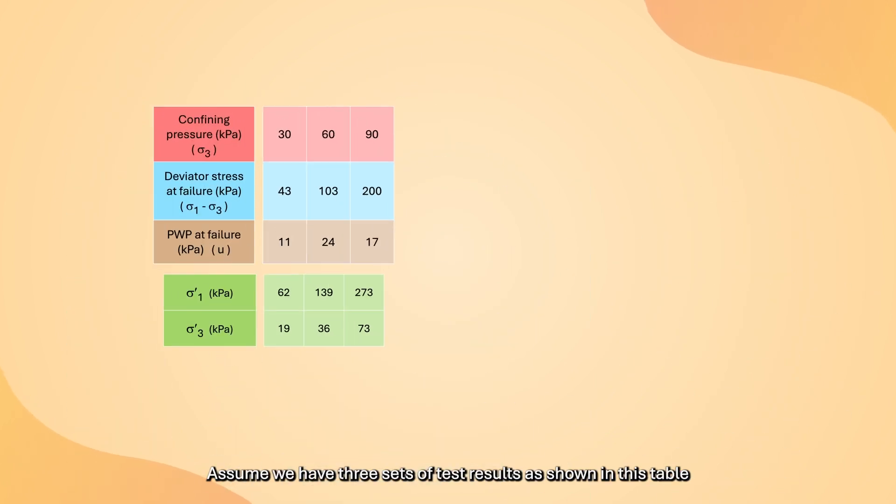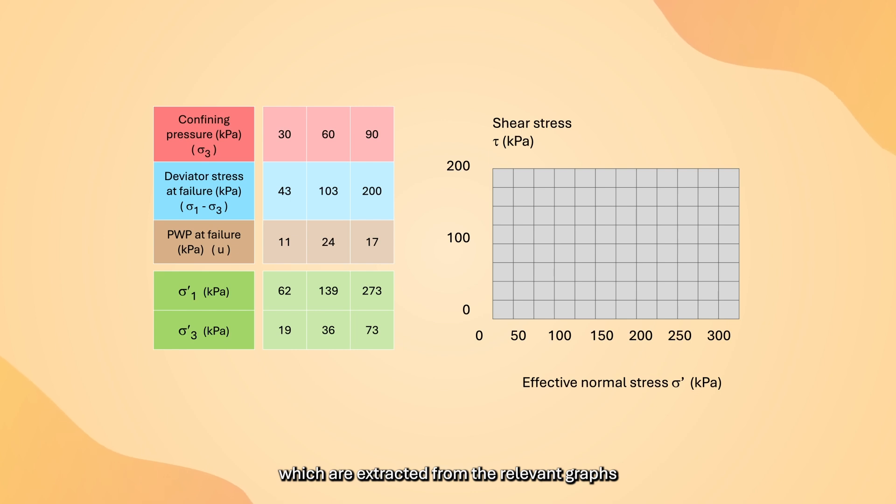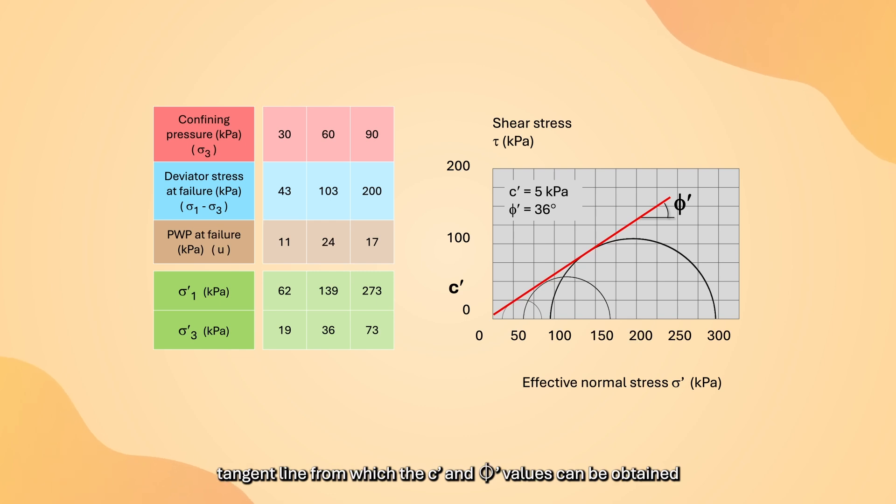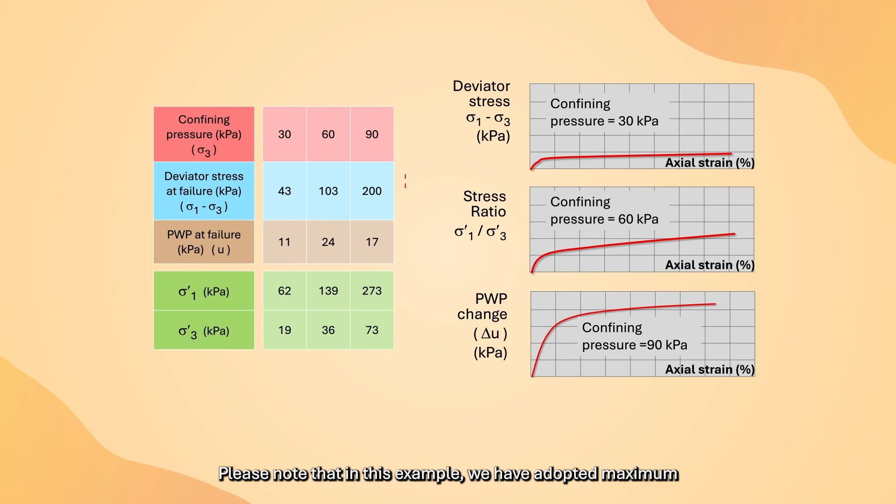Assume we have three sets of test results as shown in this table, which are extracted from the relevant graphs. We can compute the corresponding σ3' and σ1' as shown. We can now construct three Mohr circles and draw a best-fit tangent line from which the C' and φ' values can be obtained. Please note that in this example, we have adopted maximum deviator stress as the failure criterion of the soil. We will come back to the selection of failure criterion later.